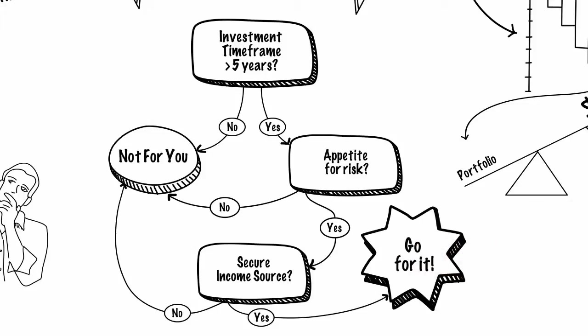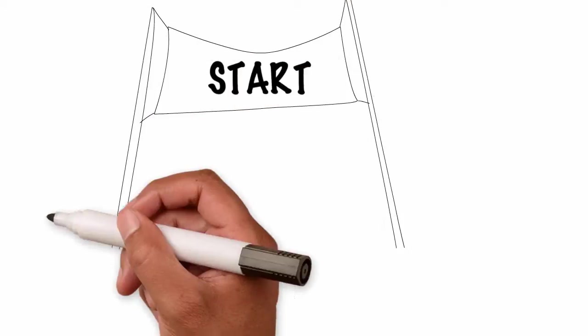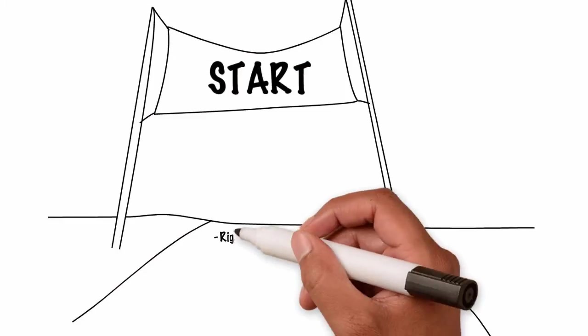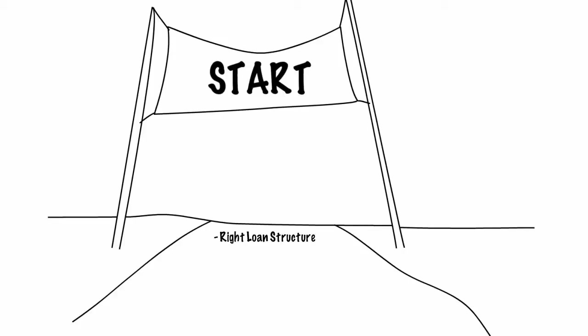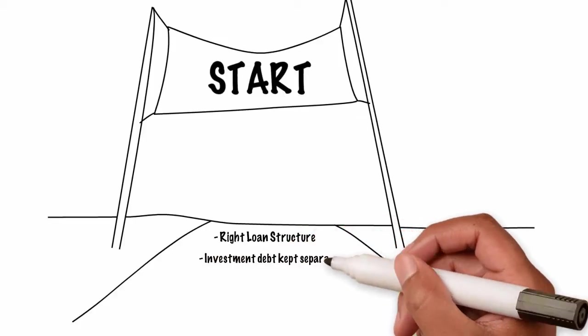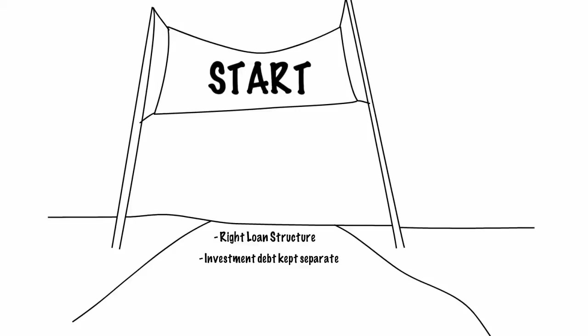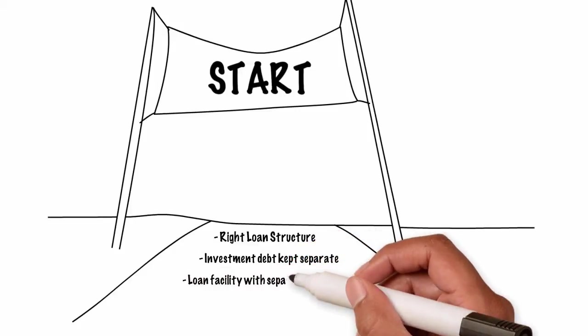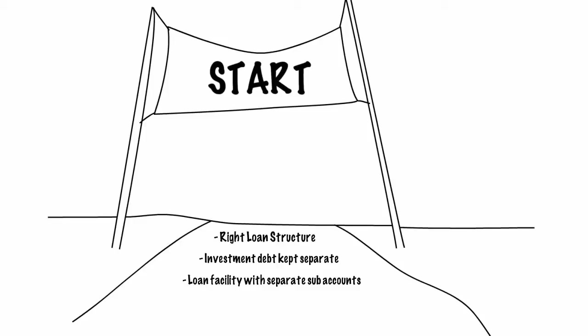How do you start? To commence a debt recycling strategy, investors should first ensure they have the right loan structure as some of the investment debt will have deductible interest costs. These amounts should be kept separate. A loan facility allowing separate sub-accounts is preferred with the ability to choose between principal and interest. Interest-only repayments are also desirable.